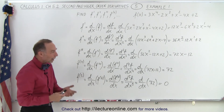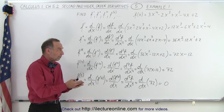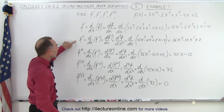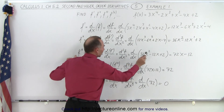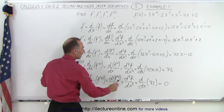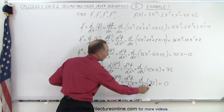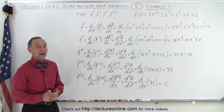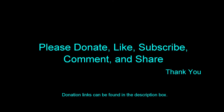So that's what we mean by higher-order derivatives. Each time we take an additional derivative, it's the derivative of the previous one. The second derivative is the derivative of the first, the third is the derivative of the second, the fourth is the derivative of the third, and the fifth is the derivative of the fourth. And that is how it's done. Thank you.